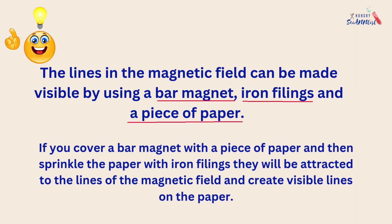The magnetic field is invisible. However, the lines in the magnetic field can be made visible by using a bar magnet, iron fillings, and a piece of paper. If you cover a bar magnet with a piece of paper and then sprinkle the paper with iron fillings, they will be attracted to the lines of the magnetic field and create visible lines on the paper.